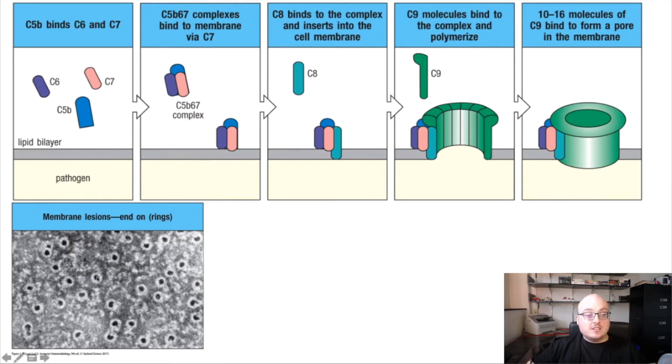And these pores are very obvious under the microscope. This is electron microscopy. You can see that this bacterium is full of holes that have been initiated by the membrane attack complex. So this is a very effective mechanism of killing bacteria and infected cells in our bodies. So this is membrane attack. This is one of the effector mechanisms of complement.